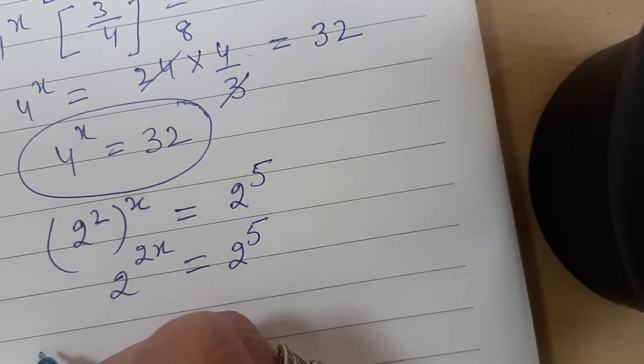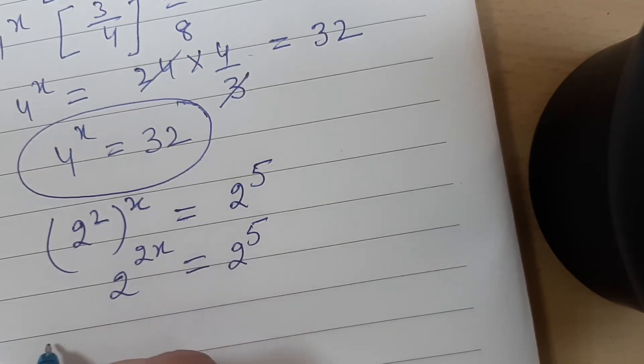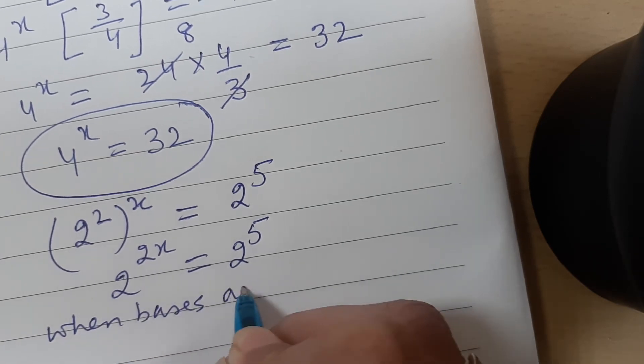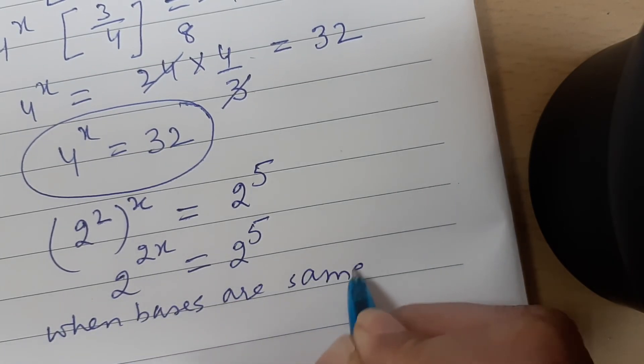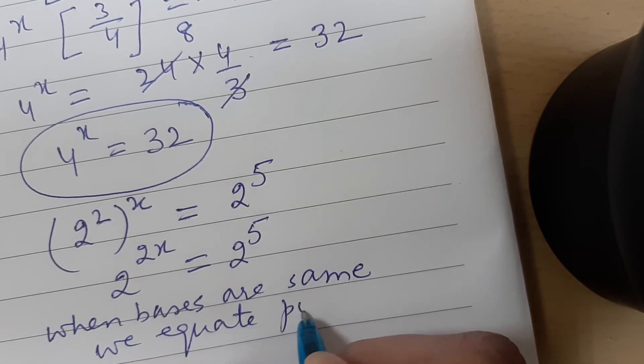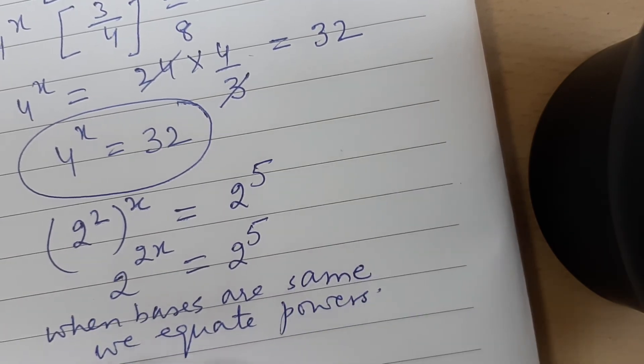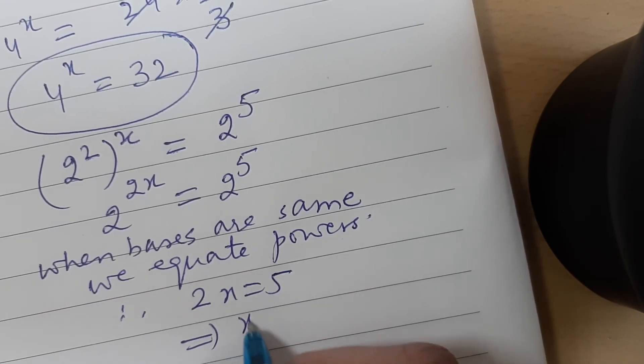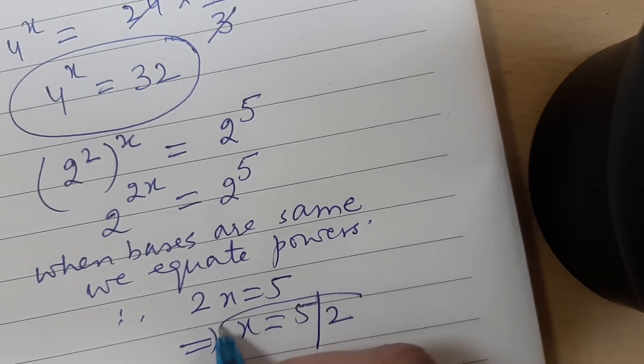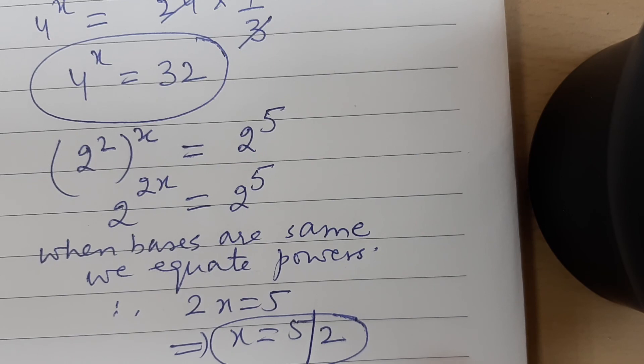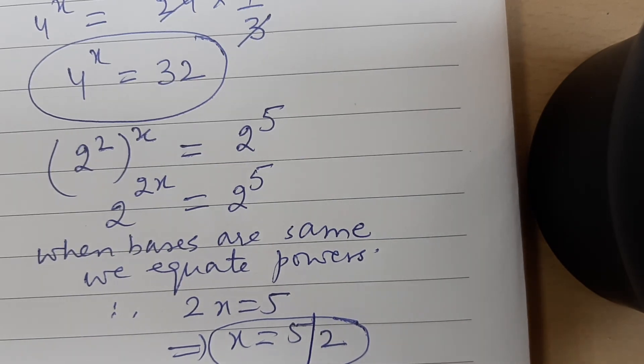We know that when bases are same we equate powers. So therefore 2x will be equal to 5. So x comes out to be 5 upon 2. The answer to this question is x is equal to 5 upon 2. I hope it is clear to you.